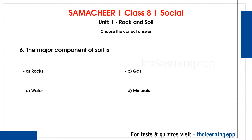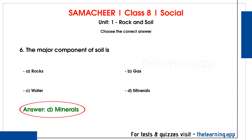The major component of soil is dash. Options are A. Rocks, B. Gas, C. Water, D. Minerals. Correct answer is D, Minerals. Soil's major component is minerals. Minerals are the most important part of the soil.